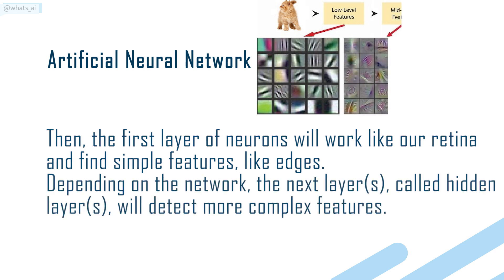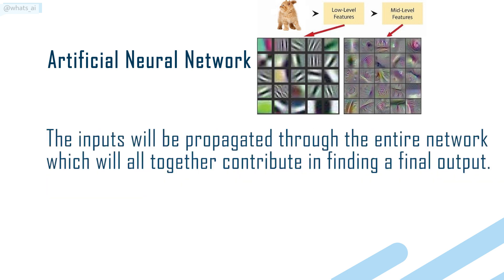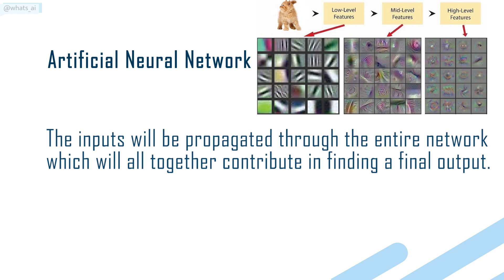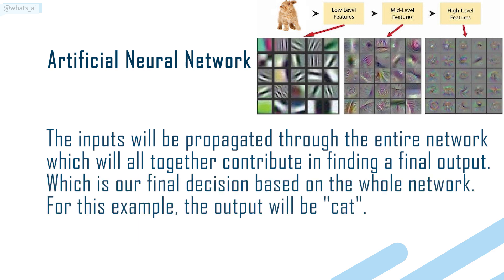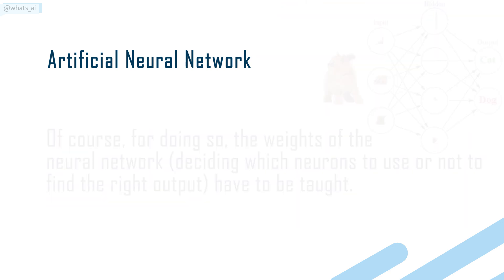Depending on the network, the next layers, called hidden layers, will detect more complex features. The inputs will be propagated through the entire network, which will all together contribute in finding a final output — which is our final decision based on the whole network. For this example, the output will be cat.